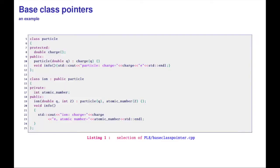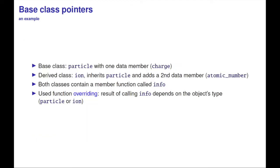Let's look at the example of base class pointers. I've got a class called particle which contains one double called charge, a constructor, and an output function called info. Then I have a class ion which inherits particle. It contains its own additional variable atomic number, a constructor that calls the particle constructor and constructs the atomic number, and an info function. We've overridden the info function to do something different. The base class particle has one data member, the derived class has two, and both contain a member function info which has been overridden.